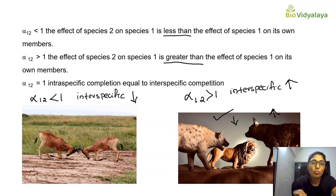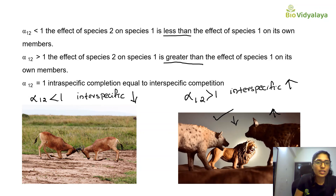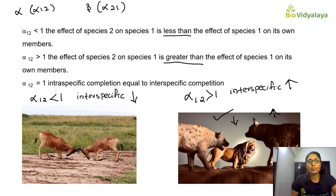In some books you can see the notation α12 and α21 written differently, but you have to remember these terms. This is very important — you will get CSIR NET questions based on this concept.